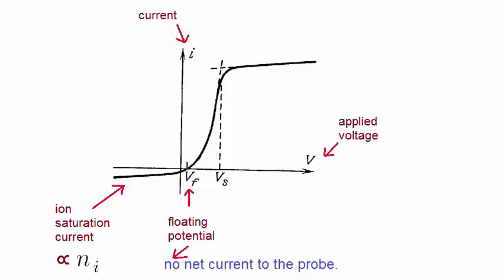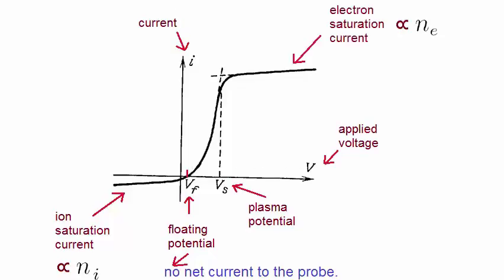All it means is that if we place an isolated object in this plasma, then it will reach the floating potential. This part of the curve is known as the plasma potential, which is just before the electron saturation current region.